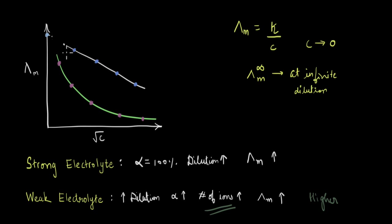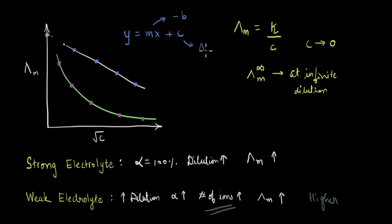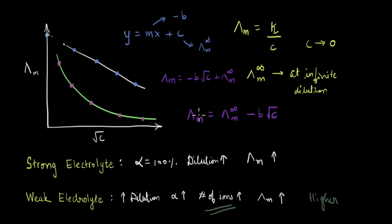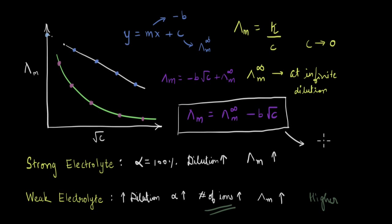Based on this information, we can write the equation of this straight line. It will be in the form y = mx + c, where the slope is negative. So let's say the slope is -b and the intercept is the molar conductivity at infinite dilution, lambda m infinity. We already know y is lambda m and x is √C. So we can write the equation as: lambda m = lambda m infinity - b√C. This straight line trend is only for a strong electrolyte.